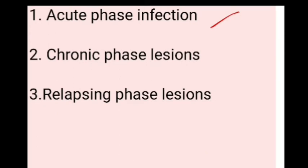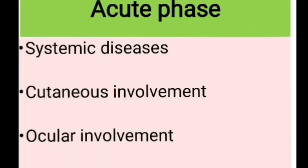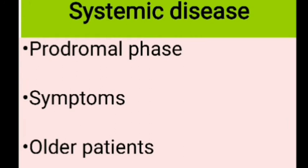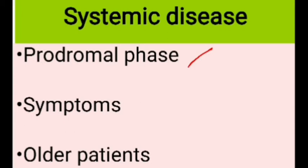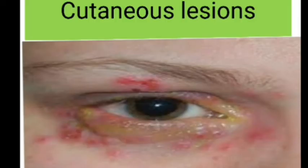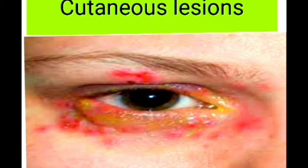Herpes zoster ophthalmicus presents in three phases: acute, chronic, and relapsing. In the acute phase, the patient can have systemic disease, cutaneous involvement, and eye involvement. Systemically, the prodromal phase precedes appearance of the rash by three to five days, characterized by tiredness, fever, malaise, headache, superficial itching, tingling, or burning sensation. In older patients, the prodromal phase can involve very severe pain over a larger area, and patients tend to develop post-herpetic neuralgia.